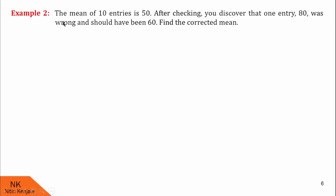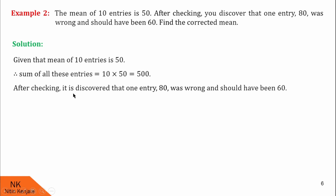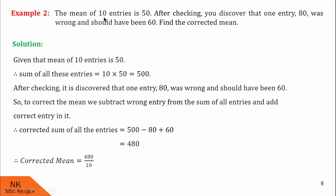In this example, the mean of 10 entries is 50. After checking, you discover that one entry, 80, was wrong and should have been 60. We are asked to find the corrected mean. Since mean of 10 entries is 50, the sum of all entries is 10 × 50 = 500. To correct the mean, we subtract the wrong entry and add the correct one: corrected sum = 500 − 80 + 60 = 480. Therefore, the corrected mean is 480 ÷ 10 = 48.